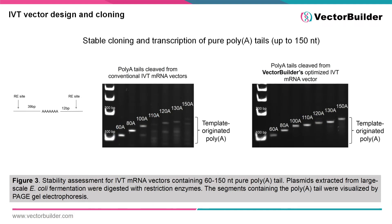The addition of poly-A tails to IVT mRNA is achieved by cloning the poly-A tail onto the vector sequence. Historically, synthesis, cloning, and validation of long stretches of poly-A have been difficult to achieve. In addition, bacteria tend to recombine long stretches of nucleotides, leading to degradation of the vectors over time. VectorBuilder's proprietary IVT mRNA backbone and cloning strategy have been optimized to stably maintain stretches of up to 150 adenines without degradation over time.